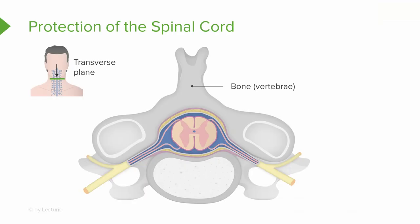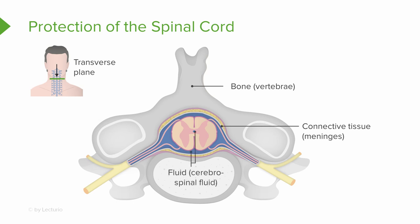The spinal cord is protected in three main ways. First, the vertebrae provide a hard layer of bony protection around the spinal cord. Second, the meninges — a connective tissue layer — provide protection directly onto the spinal cord. Third, the spinal cord is suspended in cerebrospinal fluid, which helps prevent shock by allowing for absorption during sudden movements.